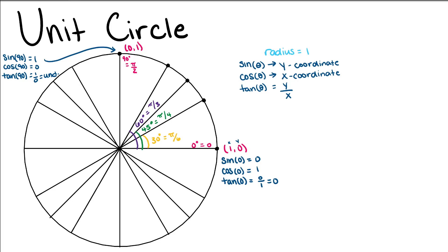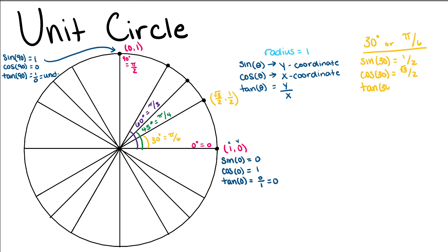Looking at our 30 degree measure, that point is at (√3/2, 1/2). This value is given to us — that x and y coordinate is given to us. But using that x and y, we can define our sine, cosine, and tangent at this point. So the sine of 30 is 1/2, cosine of 30 is √3/2, and the tangent of 30 is (1/2) over (√3/2), and simplifying that gives us √3/3.